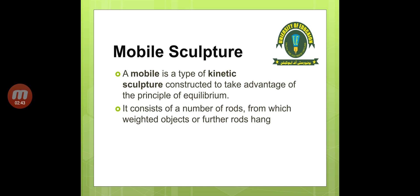Kinetic sculpture can be produced using the principle of equilibrium. It consists of a number of rods from which weighted objects or further rods hang, taking advantage of the principle of equilibrium.